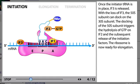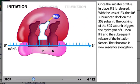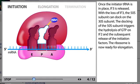Once the initiator tRNA is in place, IF3 is released. With the loss of IF3, the 50S subunit can dock on the 30S subunit. The docking of the 50S subunit triggers the hydrolysis of GTP on IF2 and the subsequent release of the initiation factors. The ribosome is now ready for elongation.